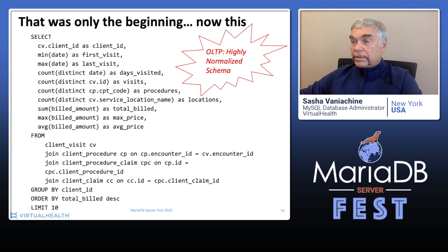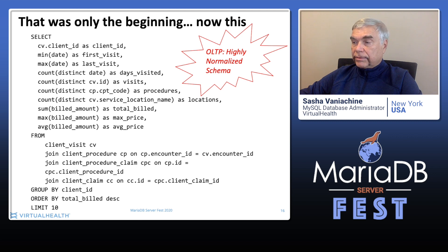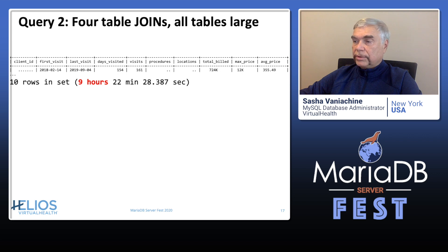But the first ranking query example was only the beginning. How about the second ranking query — identifying high-value clients? Please note that multiple table joins are not uncommon when the schema is highly normalized for transactional performance. You must be truly patient to get the result: it took over 9 hours to learn which clients experienced the most expensive treatment.